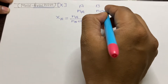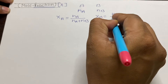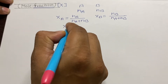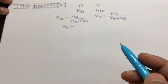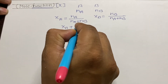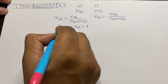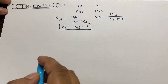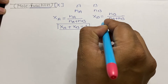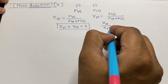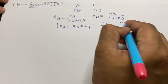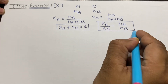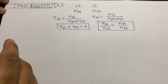Similarly, the mole fraction of B equals moles of B divided by moles of A plus moles of B. If more than one component is present — like A, B, C, and D — the summation of all mole fractions equals one. So chi-A plus chi-B equals one. One important result to remember: the ratio of mole fractions is equal to their mole ratio, which is very helpful for relating mole fraction to other concentration terms.